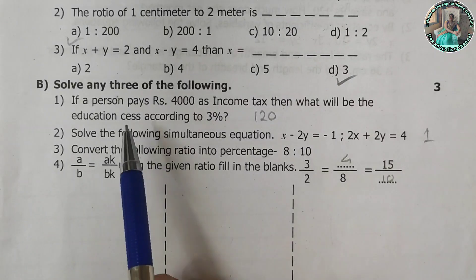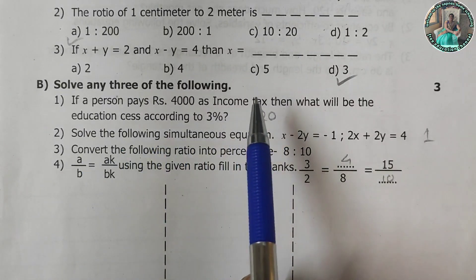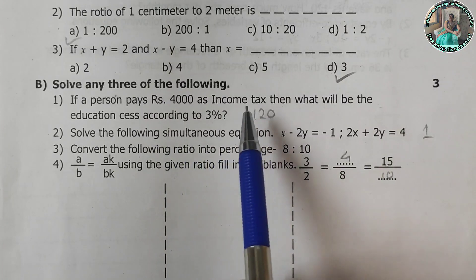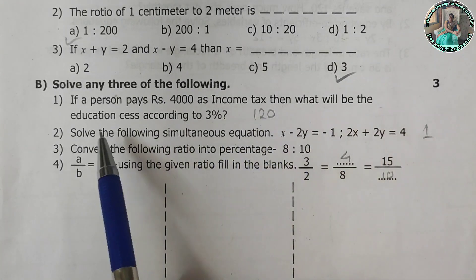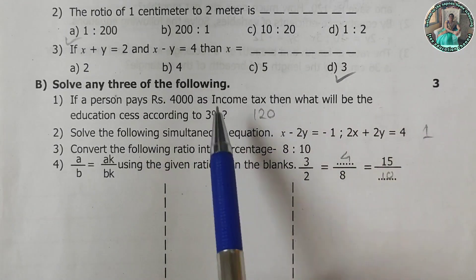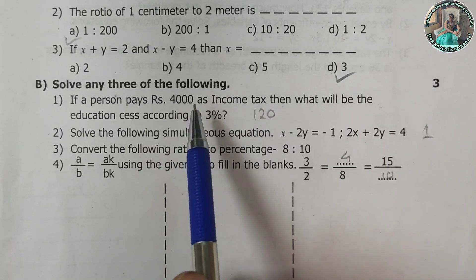Solve any three of following. If a person pays rupees 4000 as income tax, then what will be the education cess according to the 3%. So here you have to find 3% of 4000, that is 120.